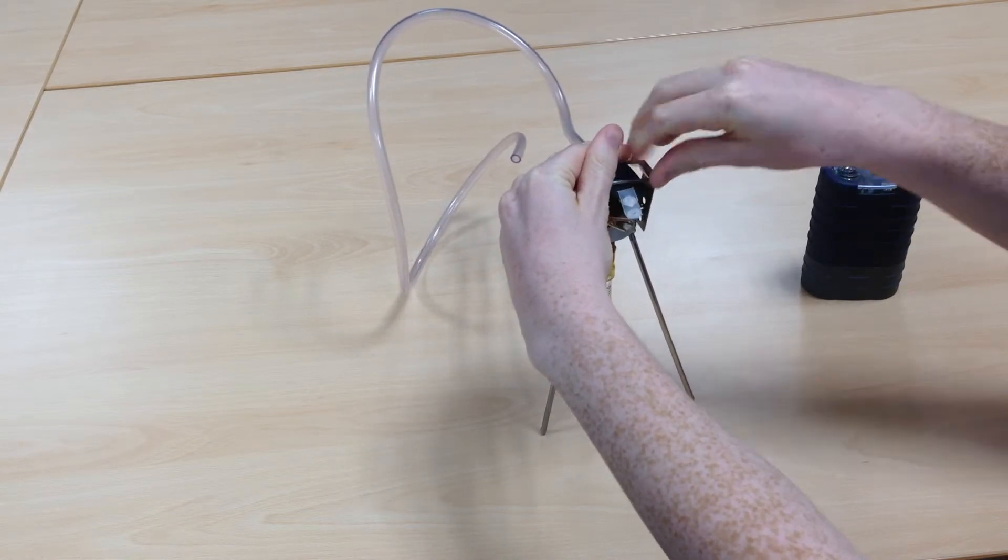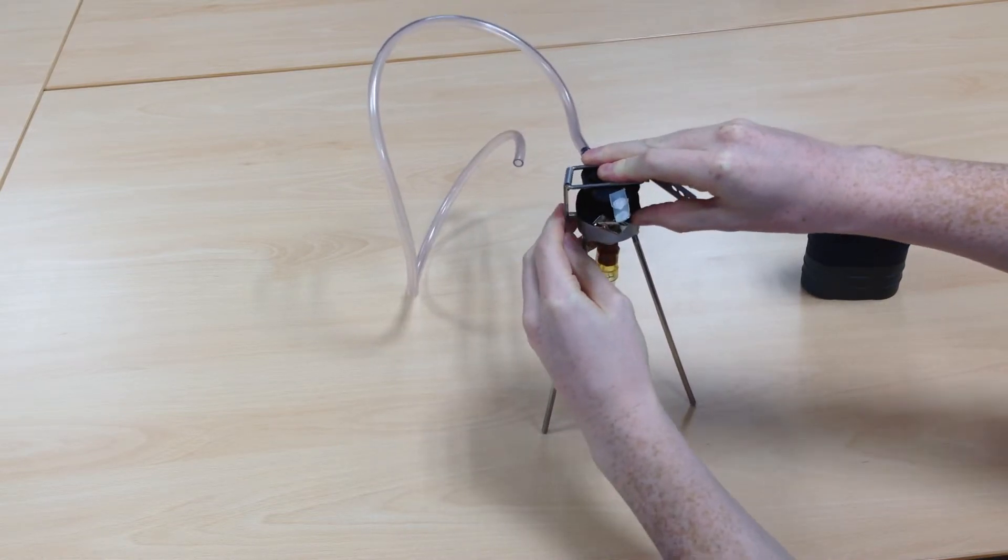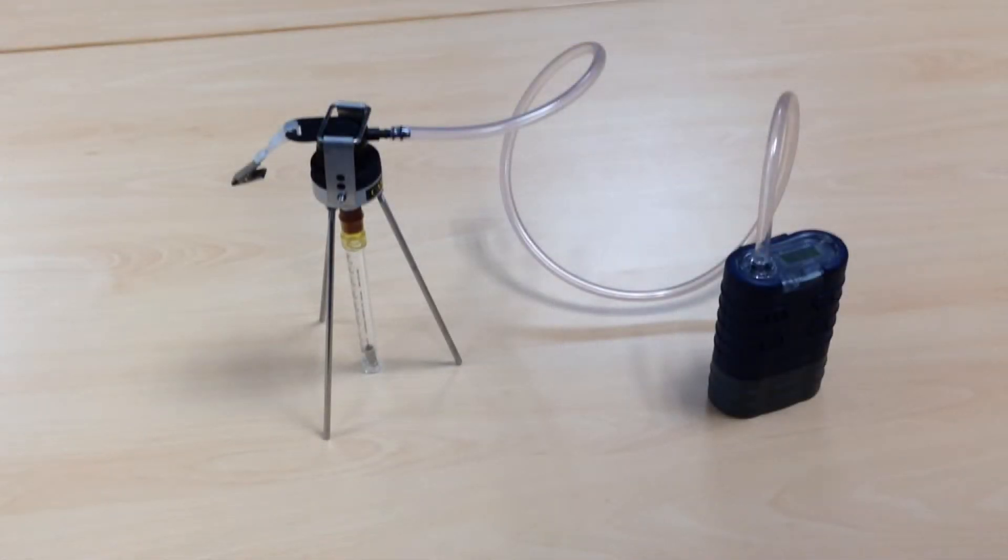You will need to make sure the head is as secure as possible so there are no leaks. You can then attach the tubing to your sampling pump. The calibration train will look something like this when complete.